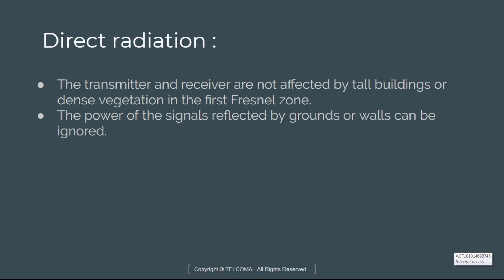Direct radiation occurs when the transmitter and receiver are not affected by tall buildings or dense vegetation in the first Fresnel zone. The direct radiation power constitutes the main power source of the received signals, and the power of signals reflected by backgrounds or walls can be ignored.